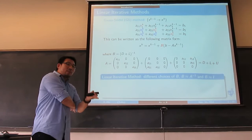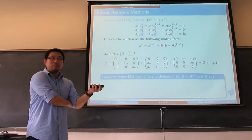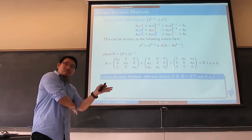But that's too expensive, as we showed before. So you want B to be cheap to compute — you want B to be just the identity. That is cheap to compute, but that will be a bad approximation. So you want something between A inverse and identity.